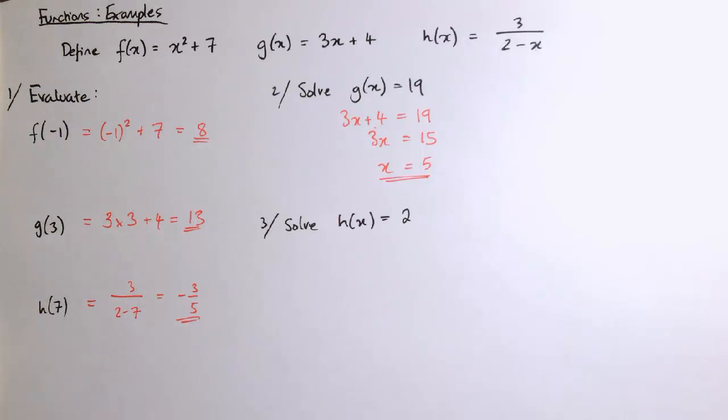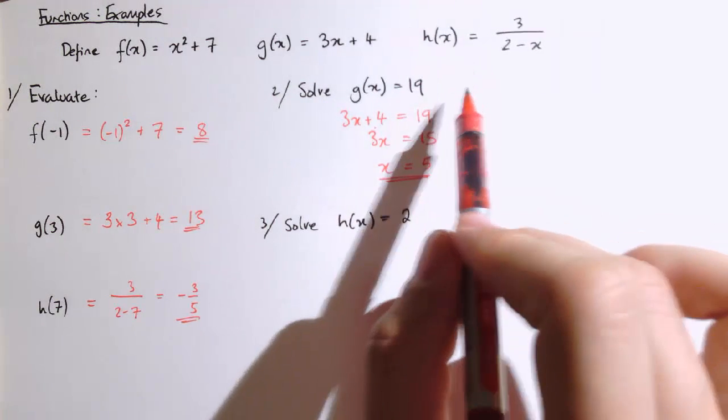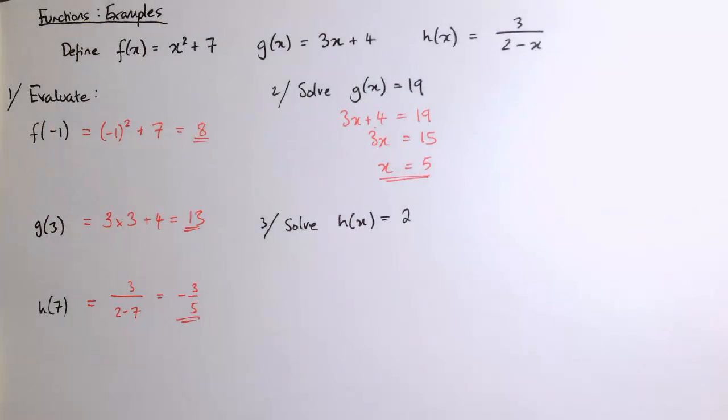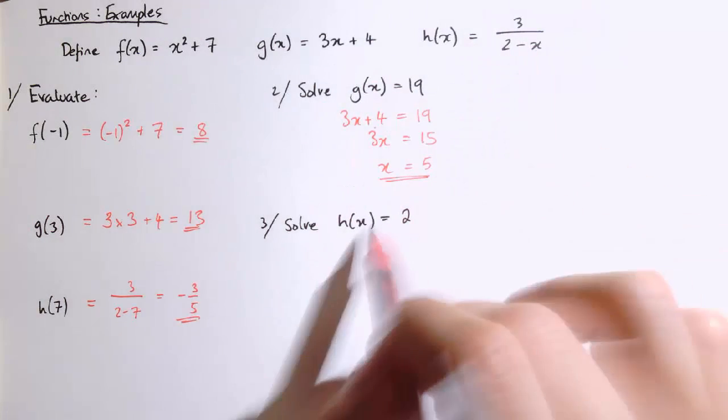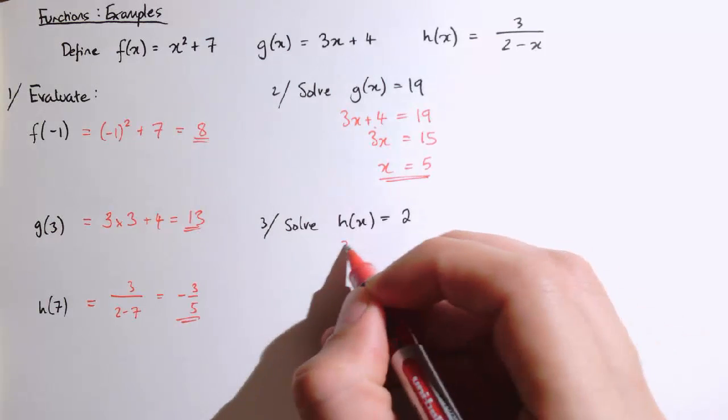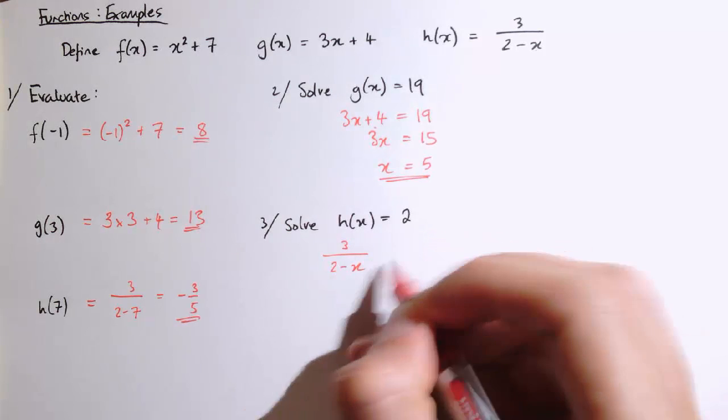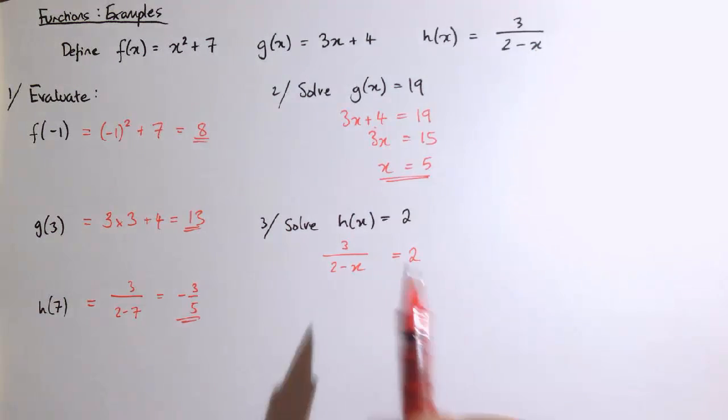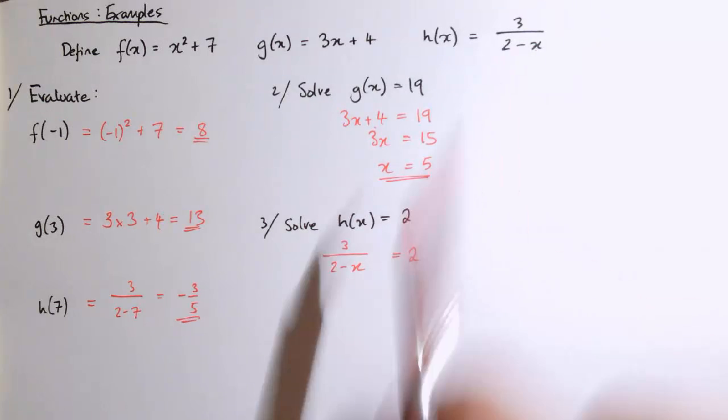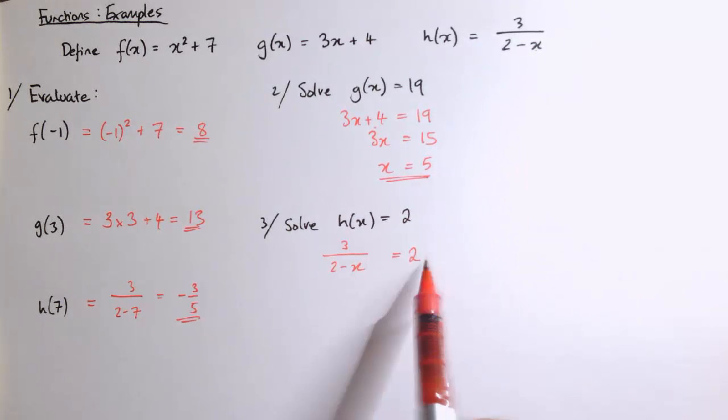Same for this next one then. Let's just solve h of x equals 2. h of x equals 2, so let's replace h of x with 3 divided by 2 minus x. That's all equal to 2. Essentially, we're looking for which value of x we can put into this function to make that output equal to 2.